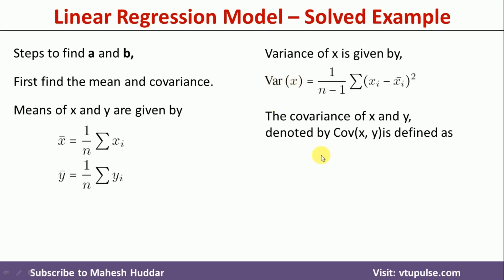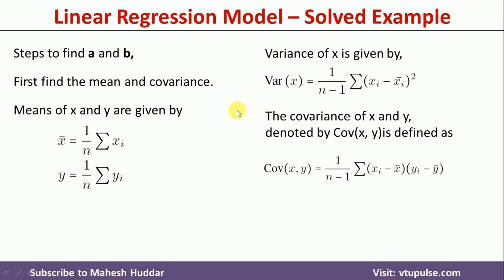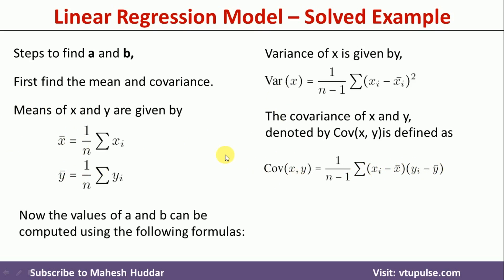Once you find the variance of x, we have to find one more variable — the covariance of x and y. The covariance of x and y is always equivalent to 1 divided by (n minus 1), times the summation of (x_i minus the mean of x) multiplied by (y_i minus the mean of y). So once you find the mean of x and y, the variance of x, and the covariance of x and y, we can find the values of a and b: b is always equivalent to covariance of x,y divided by variance of x, and a is equivalent to the mean of y minus b multiplied by the mean of x.